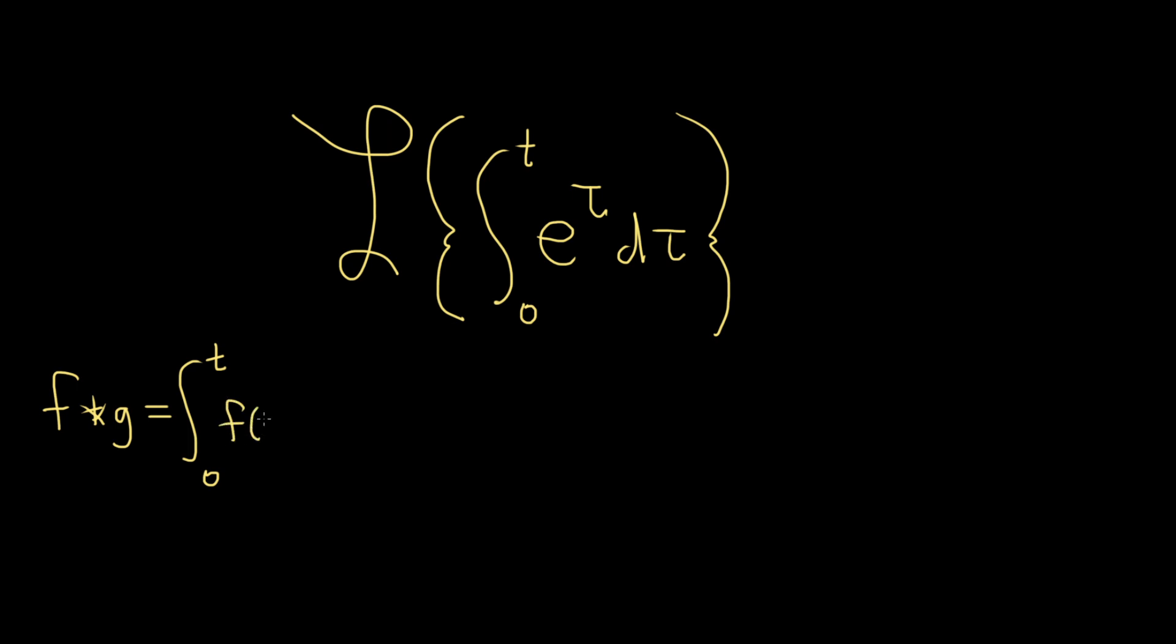It's f of tau, and you can use different variables here. Sometimes I use v or w, I'll use tau this time. And then g of t minus tau, d tau. It's fun to use tau.